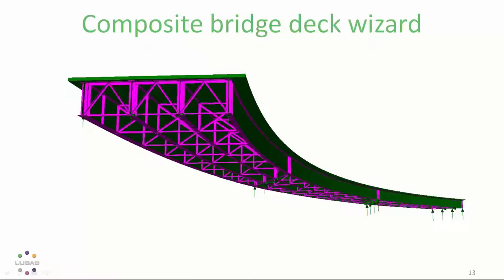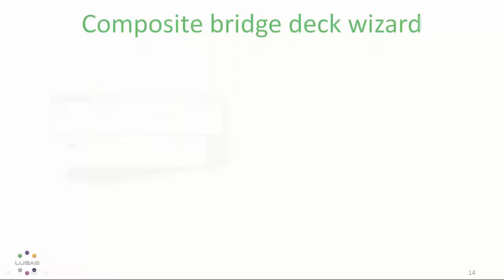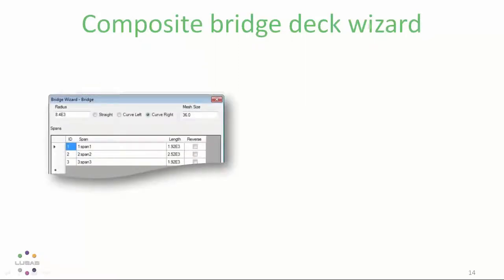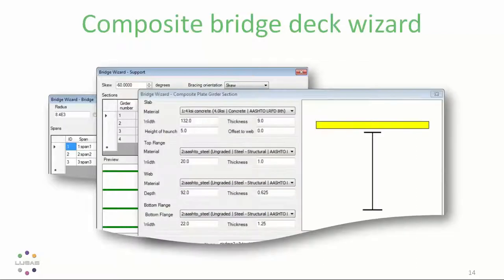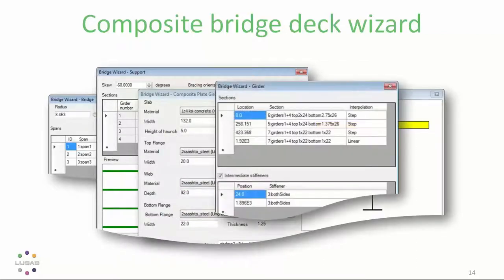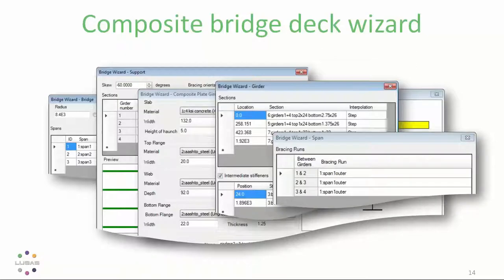So LUSAS version 19 introduces a parametric approach where you define the bridge, the plan curvature, number of spans, number of spans and support definitions, the supports, the skew, the restraints, the bracing arrangements, of course the sections and the materials, where each section is applied, the stiffeners and intermediate bracing.